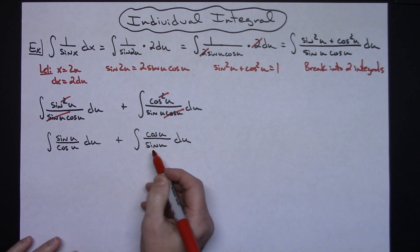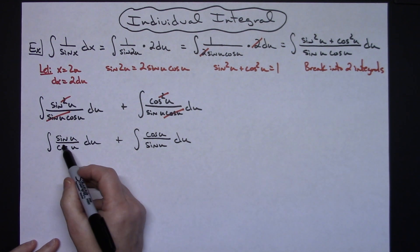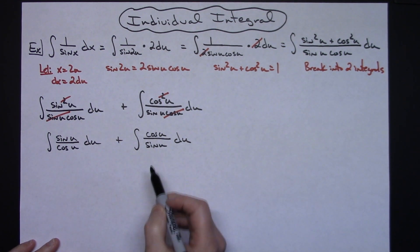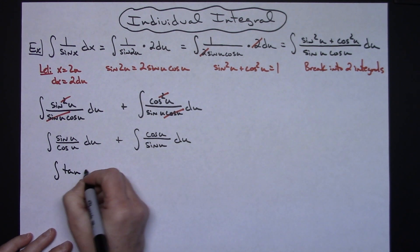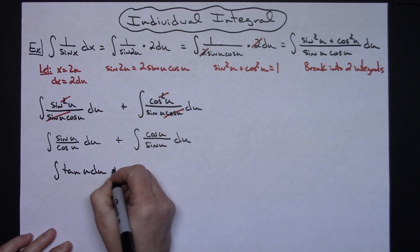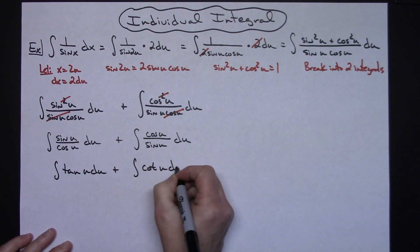Now on this, pretty common quotient identities there. I'm going to substitute those for what they're equal. So sine over cosine is tangent. Cosine over sine is cotangent. So then I'm going to have the integral of tangent u du plus the integral of cotangent u du.